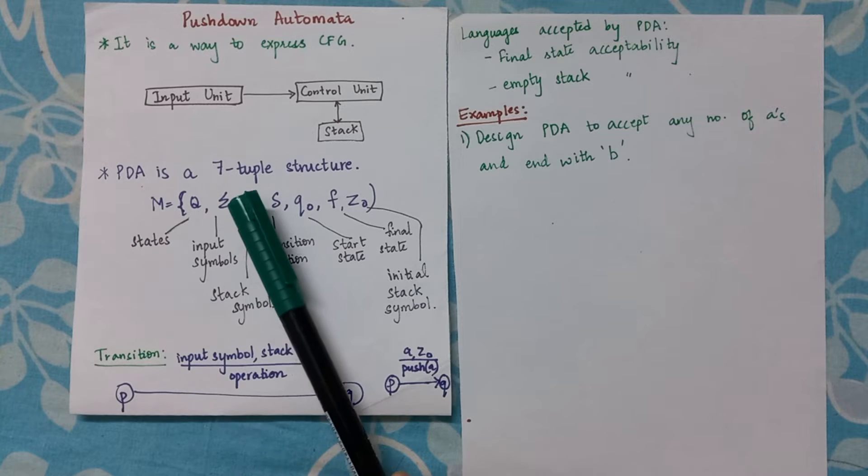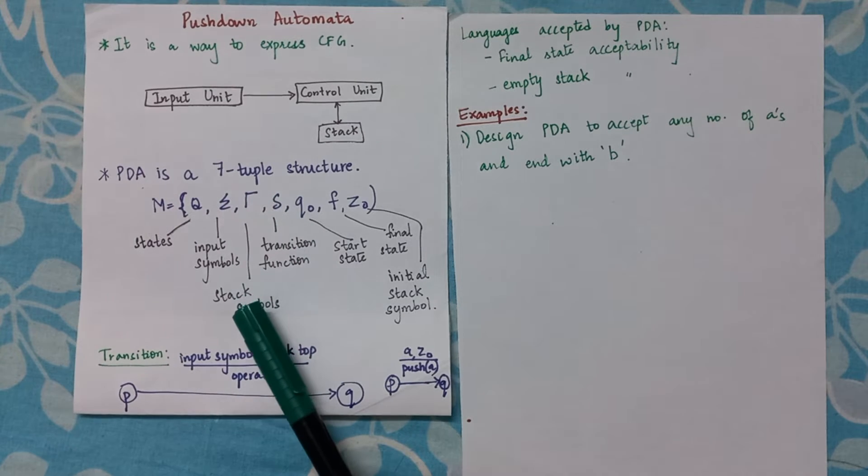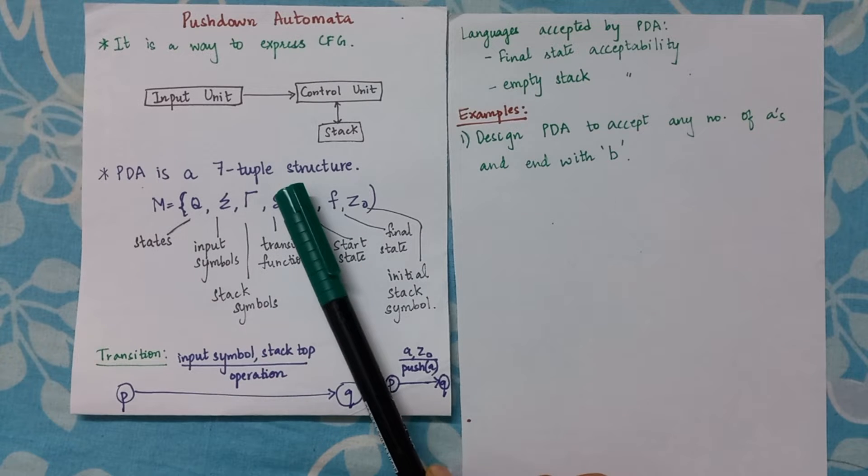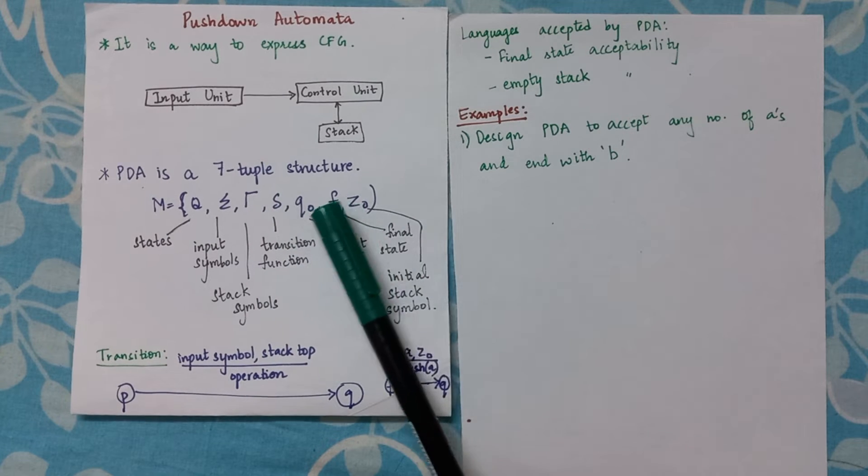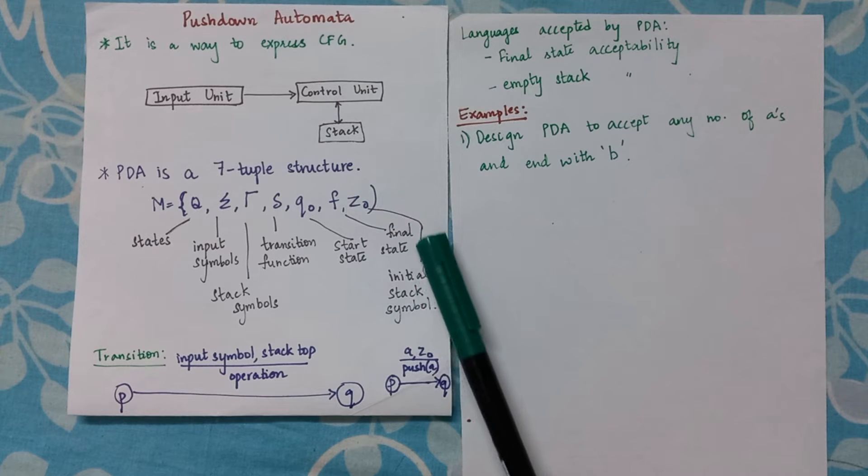Q are the states, sigma are the input symbols, you have the gamma symbol which are the stack symbols, then you have delta which is the transition function, q0 is the start state, F is the final state, Z0 is the initial stack symbol.